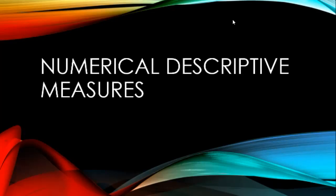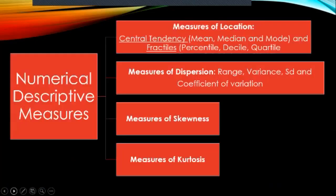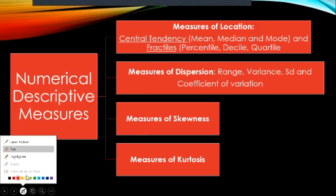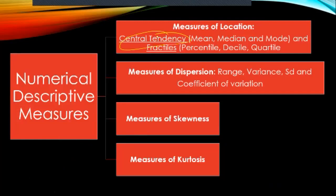Numerical descriptive measures are classified into four. We have measures of central tendency. If you have data arranged in an array — from smallest to highest — when we compute the mean, median, and mode, most likely the result is in the center of the data, or it's in the middle. That's why it's called central tendency. We also have fractiles, which will be discussed further later.